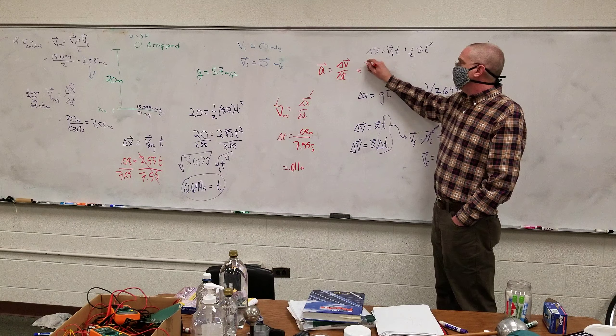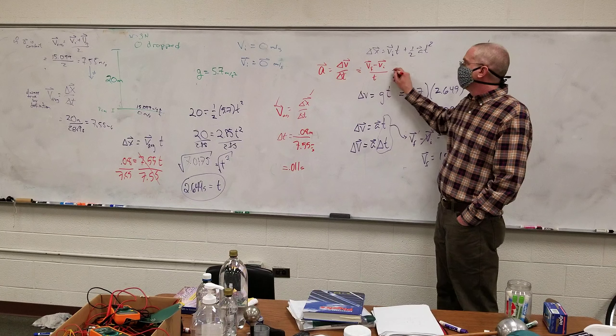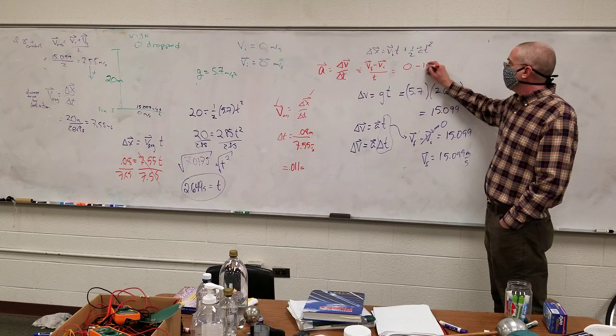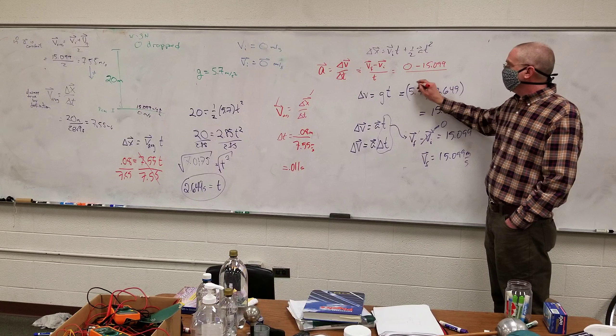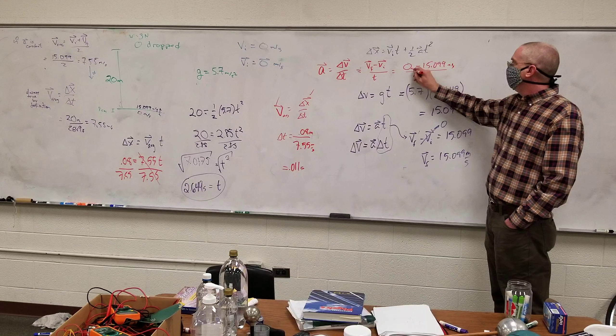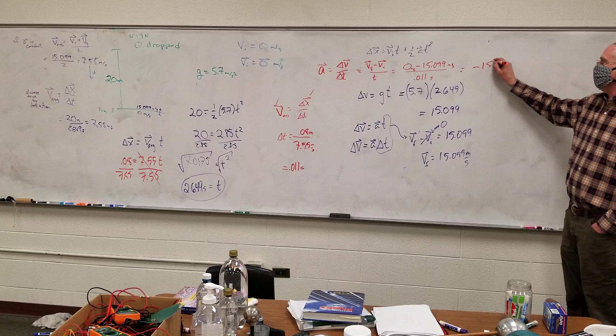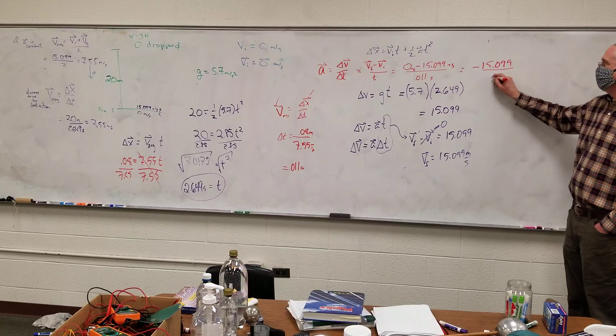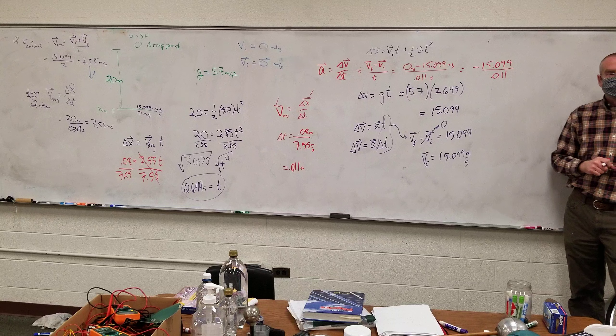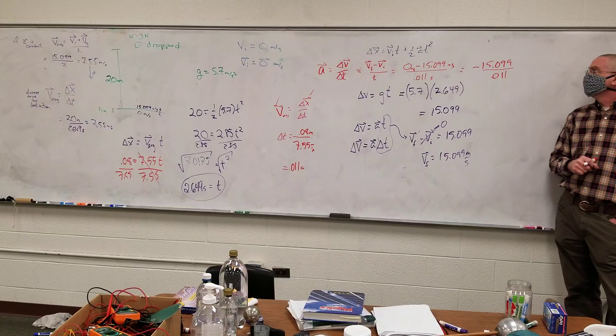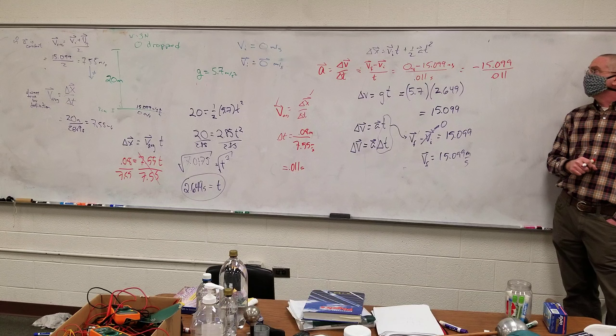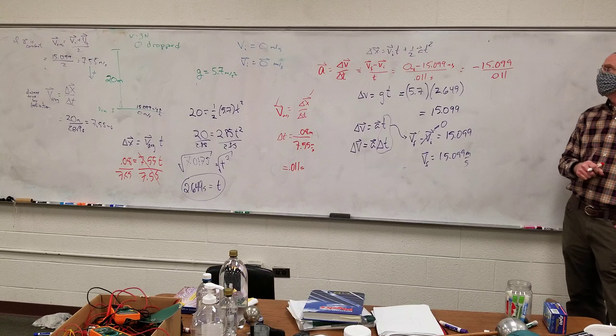So change is always final minus initial over time. I end up at zero while I'm stopping. I stop at the end minus the 15.099 divided by 0.011 seconds. I guess that's meters per second on top. So I get negative 15.099 divided by 0. That minus sign does matter.